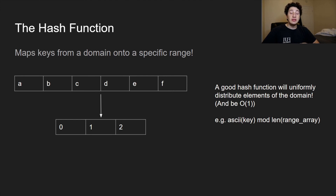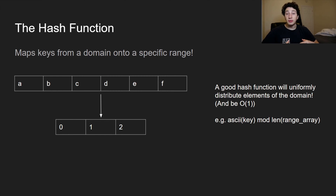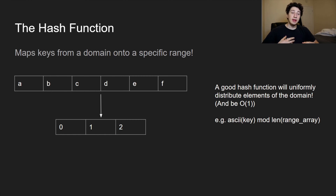I've spoken about hash functions in the context of systems design before, but to give a more formal definition: the only job of a hash function is to take some domain of potential keys and map it to a range of potential values. Generally, that range is smaller than the domain, and a good hash function operates in O(1) constant time and distributes keys relatively evenly throughout the range. For example, if we're mapping characters to integer indices, a good hash function might take the ASCII value of the key and compute the modulus of the array length.